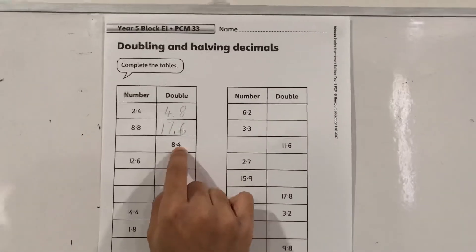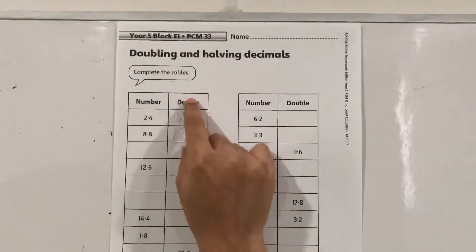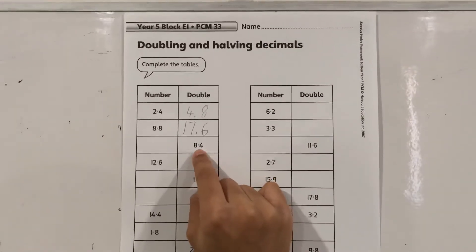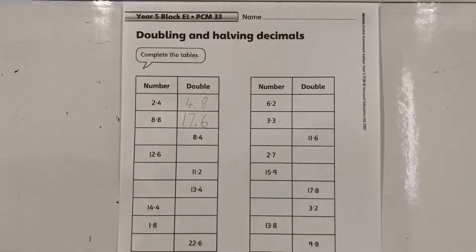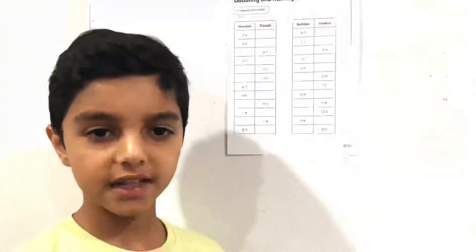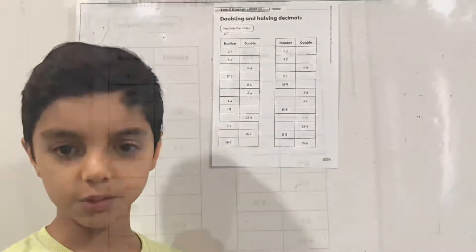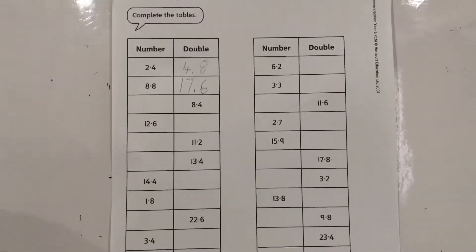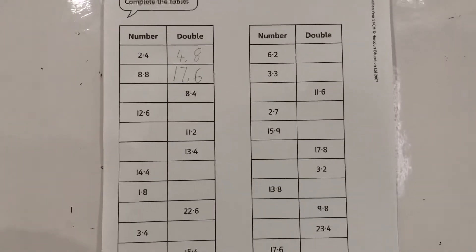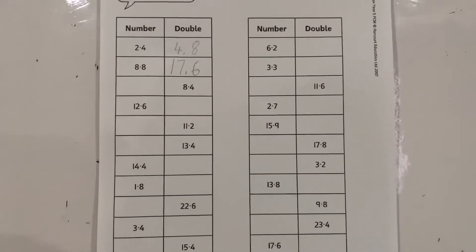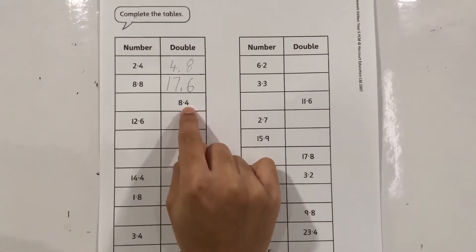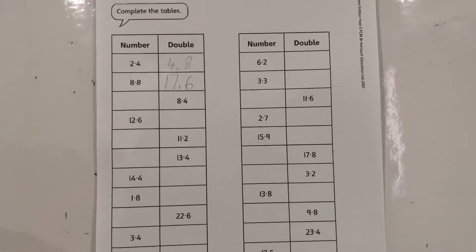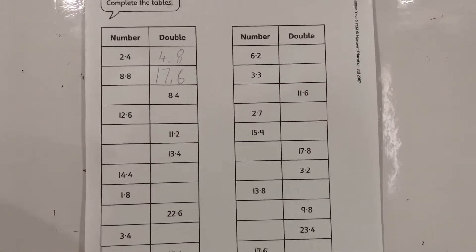Now here we don't double the number because we have got the double number. Now we need to find the half of this number, which is basically 8.4 divided by 2. To solve this, I will have 8 divided by 2 which is 4, and then 0.4 divided by 2 which is 0.2, so the answer would be 4.2.